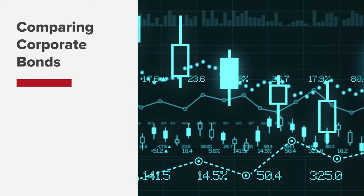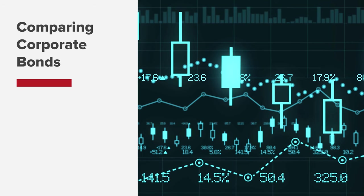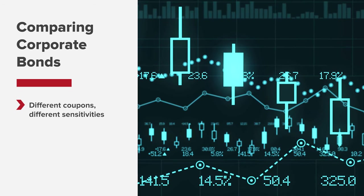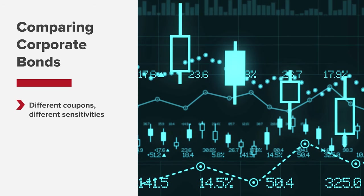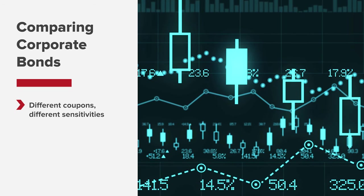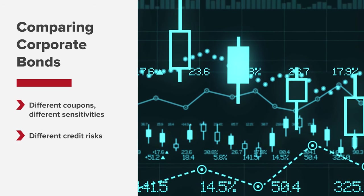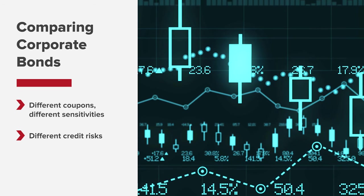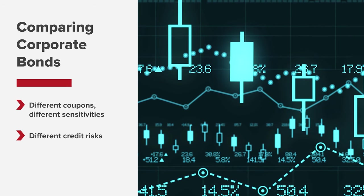You may recall from our lesson on interest rate risk that two corporate bonds with similar characteristics, but different coupon values will have different sensitivities to interest rate movements. You may also note that credit risks for the two companies are somewhat different given their credit ratings and states of financial health.